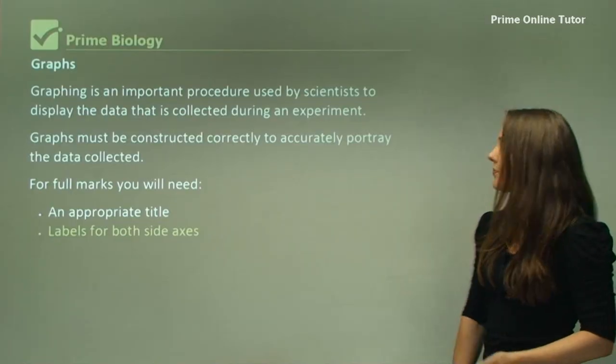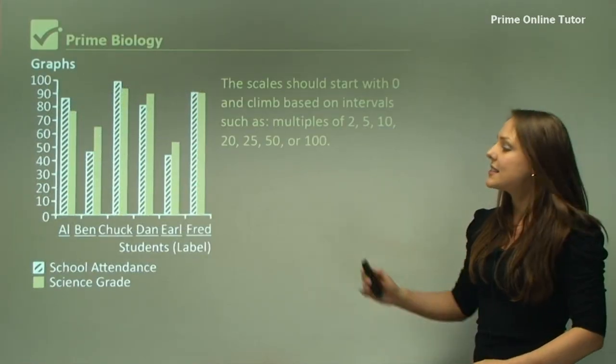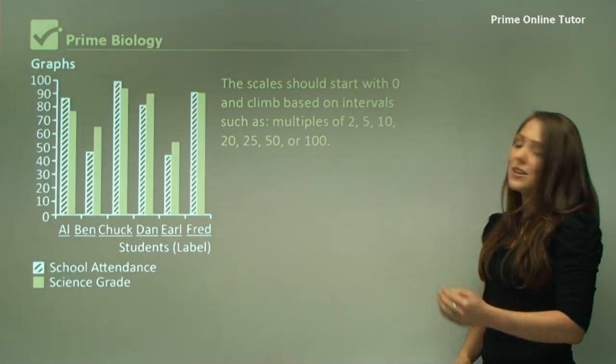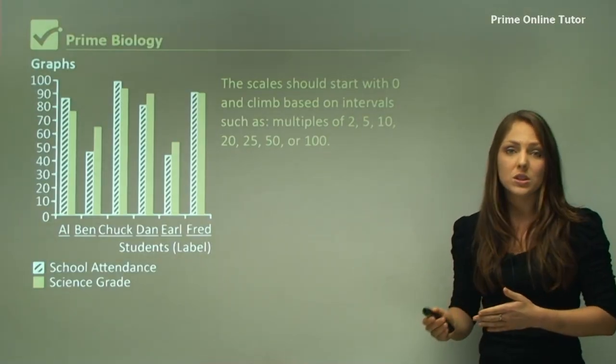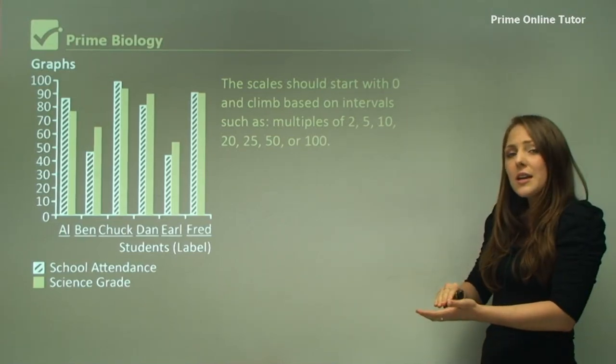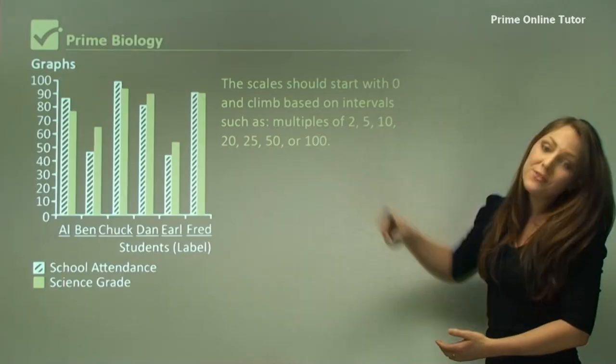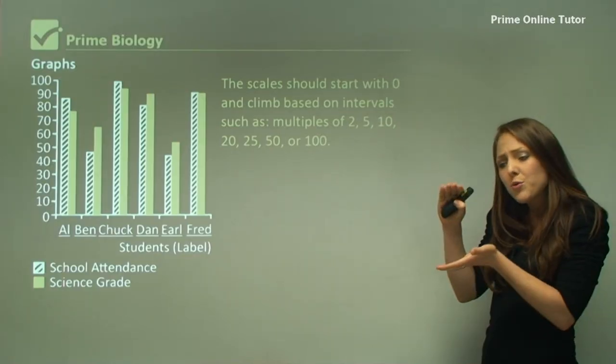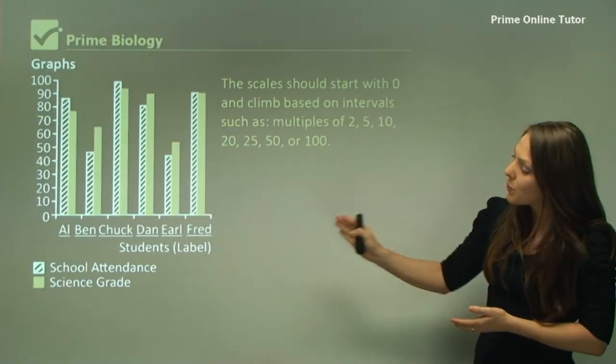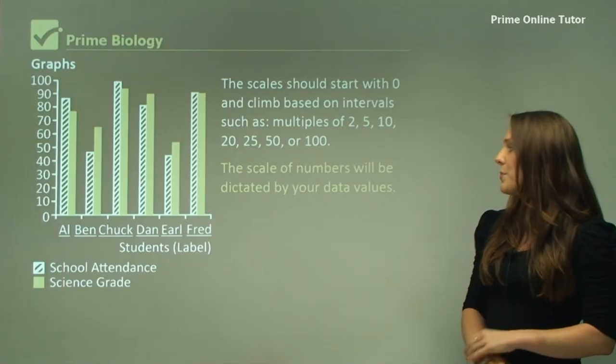For this graph, it has a scale of 10. You can see it's going up by 10, and each graph can go up by different multiples. You need to make sure your graph spreads out over your piece of paper so the data values are quite spread out. If I went up by 50, the graph would be so small you wouldn't be able to tell the difference between each of these students. The scale of numbers will be dictated by your data values.